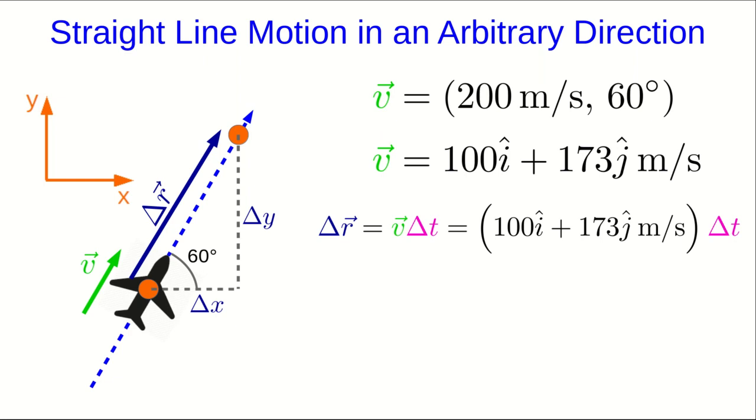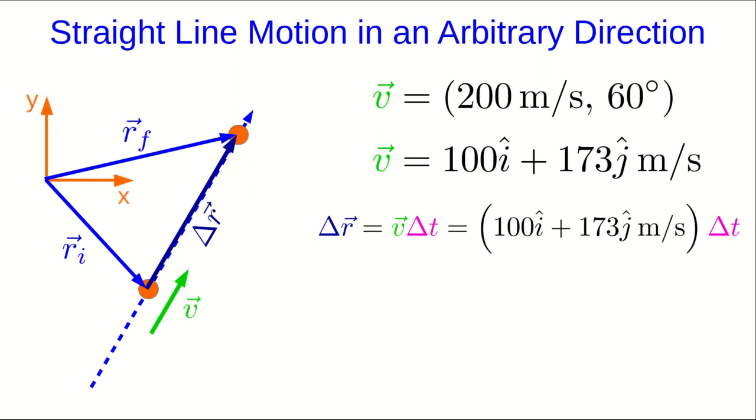Now we're almost done. But what we want is not really displacements. What we would like is to be able to write down the position of the plane at any time. So let's think about the relationship between the positions and the displacement. The triangle shows you, since r_i and delta r are head to tail with each other and point to the same place as r_f, that r_f must just be the vector sum of r_i and delta r. So we can replace delta r with v delta t. And we have our final answer.